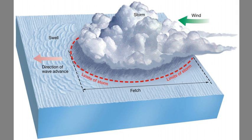Most of the waves that you see surfers riding and breaking here on the beach are formed by storms far out at sea somewhere in the Pacific Ocean. Those waves have traveled from that storm, often for several days, before they get to our coastline. The storm is like a wave factory — as the wind of the storm puts more energy into the ocean, it changes the waves in very specific ways.